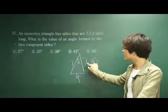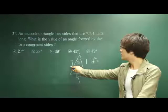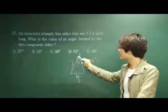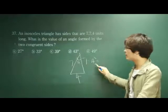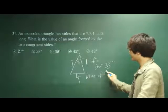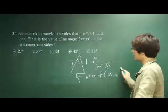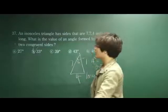4 squared equals 7 squared plus 7 squared minus 2 times 7 times 7 times cosine alpha. Alpha will be equal to 33 degrees. B is our correct answer.